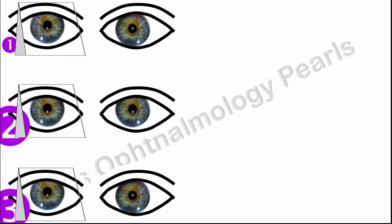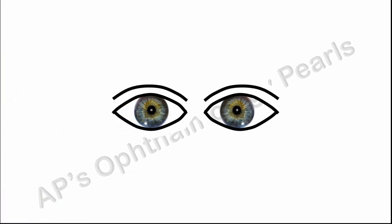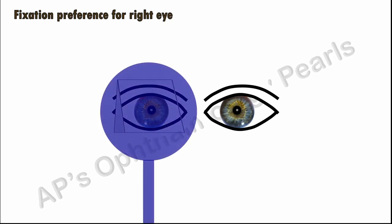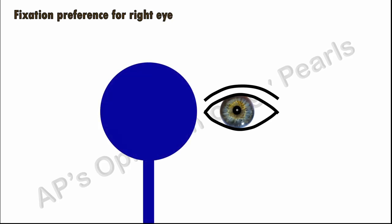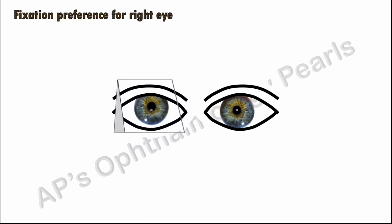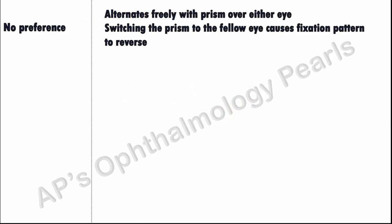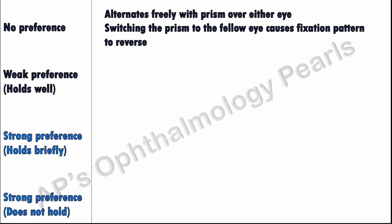Regardless of the scenario, once the fixation preference has been confirmed, the second part of the test is performed to determine how well the child maintains fixation with the non-preferred eye. If there is a fixation preference for the right eye, place the prism in front of the preferred eye and occlude that eye, forcing the non-preferred eye to fix. Then remove the occluder alone and observe for how long fixation is maintained with the non-preferred eye. Grading is done as follows: if the non-preferred eye holds well, it is a weak fixation preference. If it holds briefly or does not hold, it is termed a strong fixation preference.